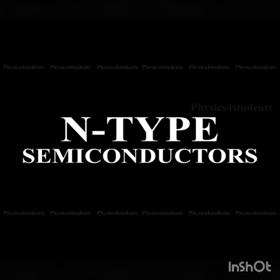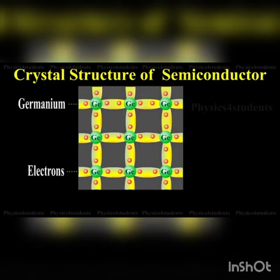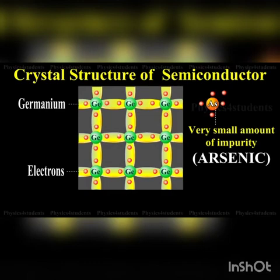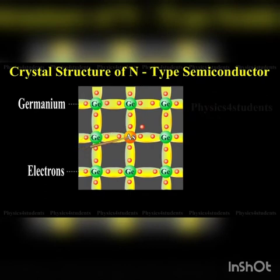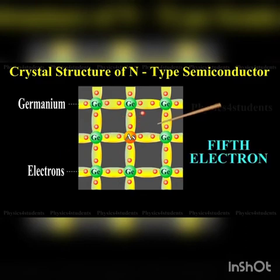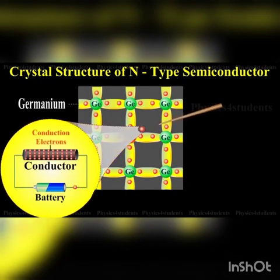When a small amount of pentavalent impurity such as arsenic is added to a pure germanium semiconductor crystal, the resulting crystal is called an N-type semiconductor. The diagram shows the crystal structure obtained when pentavalent arsenic impurity is added to a pure germanium crystal. The 4 valence electrons of the arsenic atom form covalent bonds with electrons of neighboring 4 germanium atoms. The 5th electron of the arsenic atom is loosely bound and can move almost as freely as an electron in a conductor, making it a carrier of current.